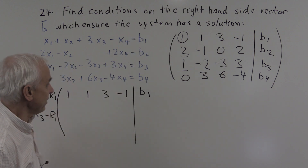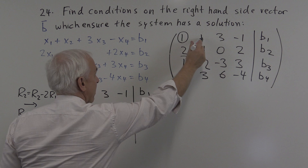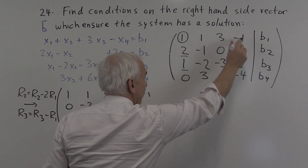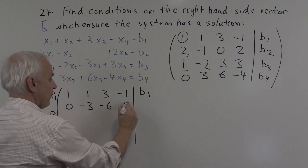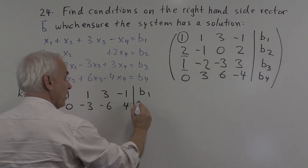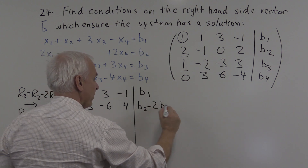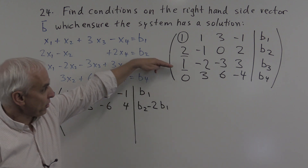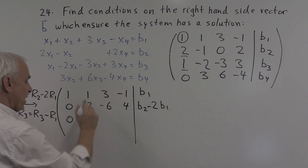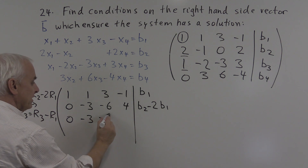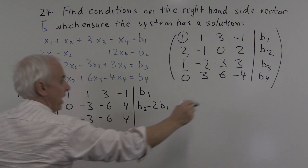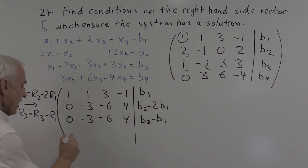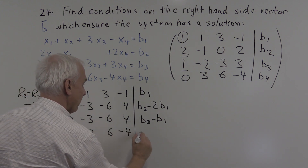So row 2 minus twice row 1: 0, minus 1 minus 2 times 1 is minus 3, 0 minus 2 times 3 is minus 6, 2 minus 2 times minus 2 — that's 2 plus 2 — that's 4. And b2 minus 2 times b1 is just b2 minus 2b1. These are unknowns, so we do algebra with them. Then row 3 minus row 1: 1 minus 1 is 0, minus 2 minus 1 is minus 3, minus 3 minus 3 is minus 6, and 3 minus minus 1 is 4. And b3 minus b1 is just b3 minus b1. The last row stays as it is: 0, 3, 6, minus 4, and b4.